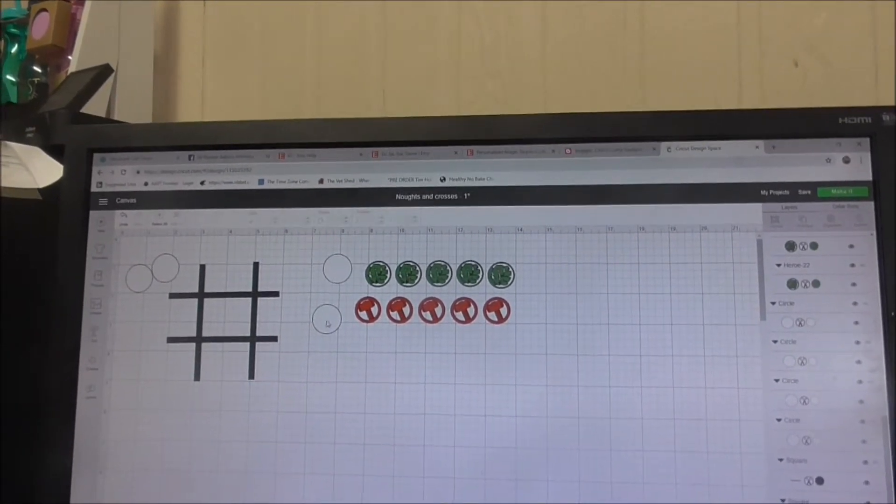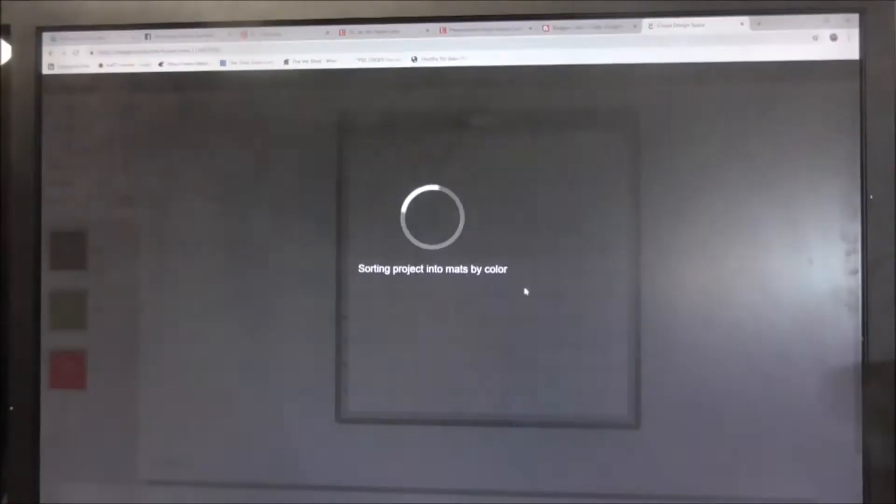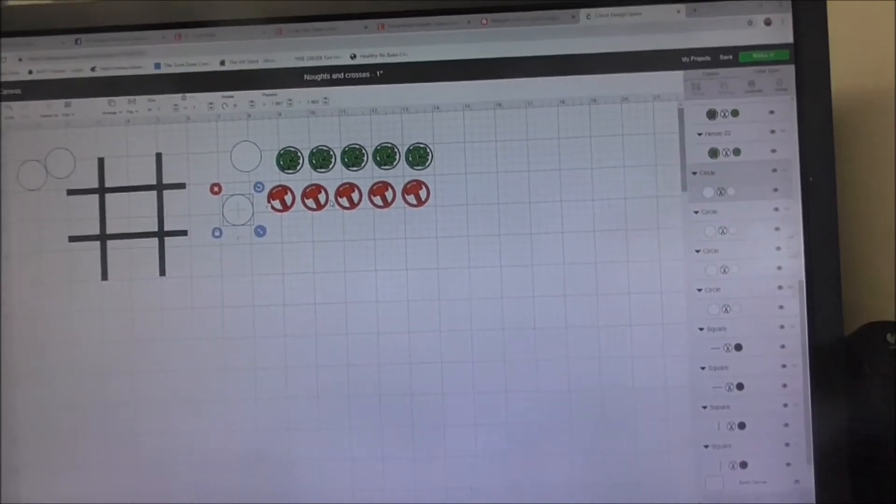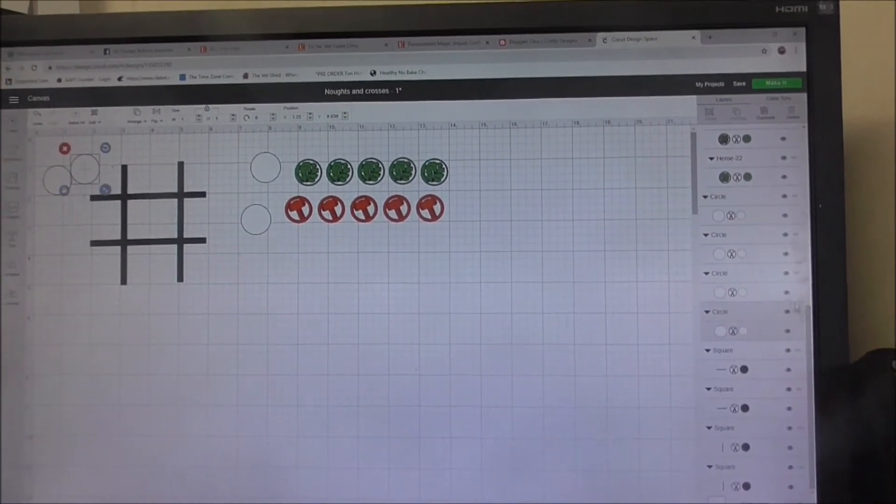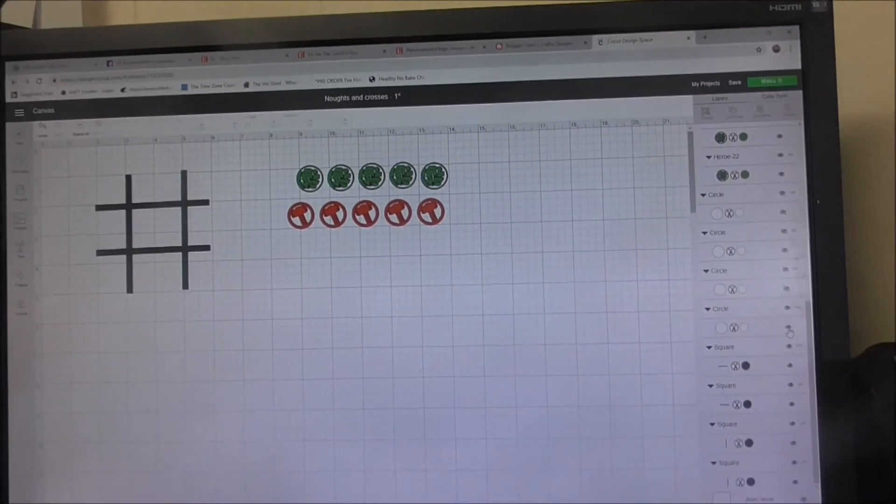I'm just going ahead and lining it all out, making sure it looks right and they have enough space for my tokens. Now we're just going to go along and prepare my mats, just going to take the right circles out so it doesn't want to try and cut them.